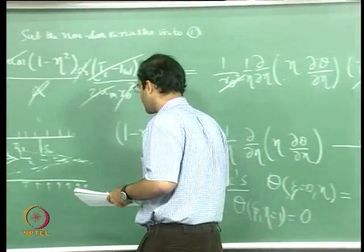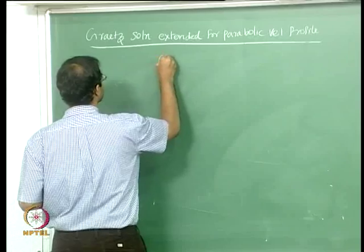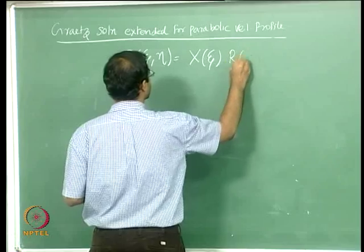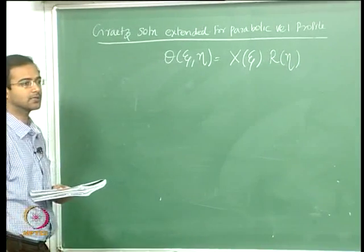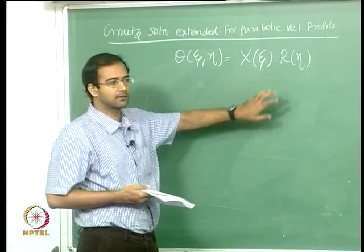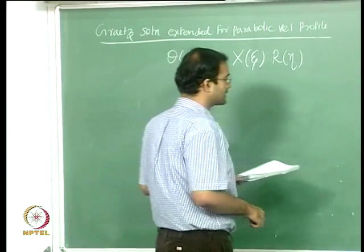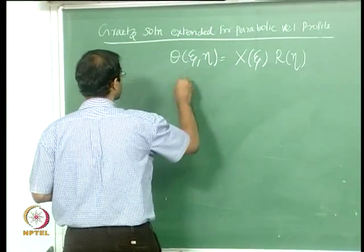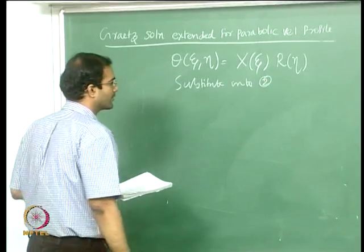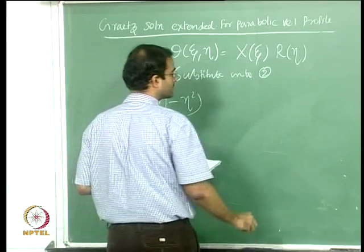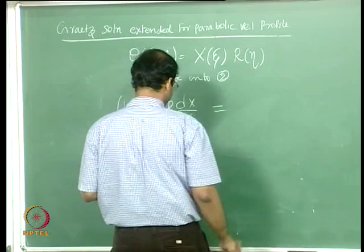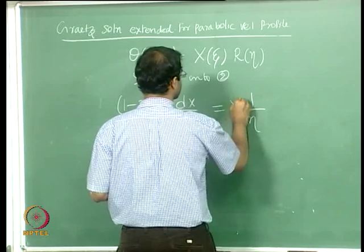We use the same separation of variables method. We write θ(ζ, η) = X(ζ) × R(η), the product of two independent solutions. Substituting into equation number 2 and separating, the left side becomes (1 - η²)(1/X)(dX/dζ) and the right side becomes (1/R)(1/(1 - η²))(1/η)(d/dη)(η dR/dη). Each side must equal a constant, which must be negative for the solution to decay exponentially along ζ.